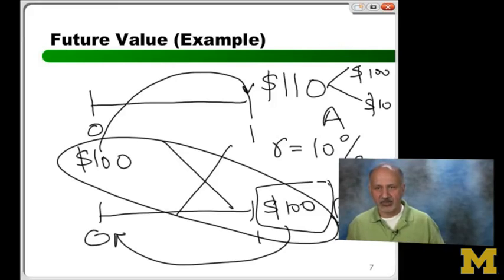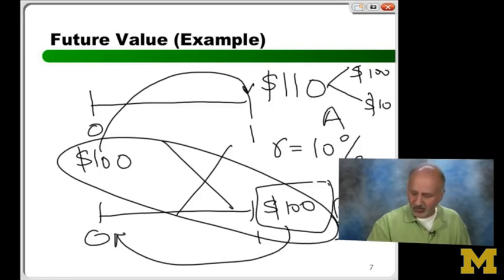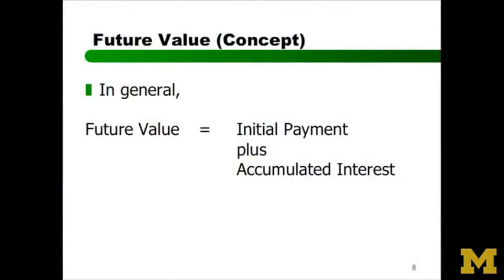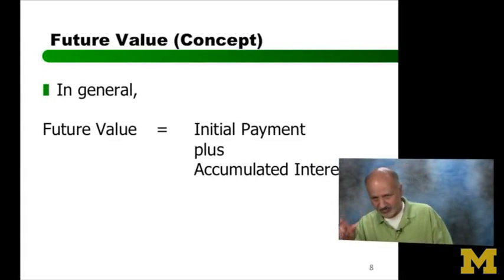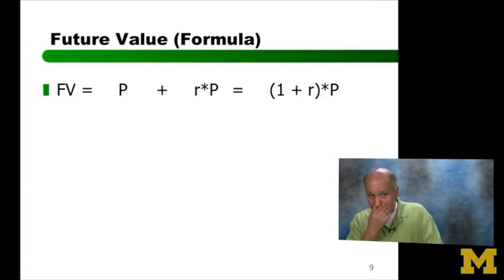So as I promised you, what I'm not going to do is I'm not going to throw a formula at you, till at least you've had some sense of where I'm going. And hopefully, this simple example has motivated you to try to understand future value a little bit better. So now, what I'm going to do is I'm going to throw the concept at you. In this concept, what it says is the following, that the future value of anything that's carried forward has to have two components. One is the initial payment, and in our example, it's $100. And the other is accumulated interest, which in our example, is $10. So the problem becomes very straightforward. You put in $100, you get $100, but then you get 10% on the hundreds, which is $10, so you get $110. So this is the formula.